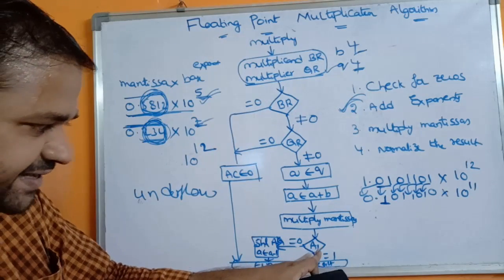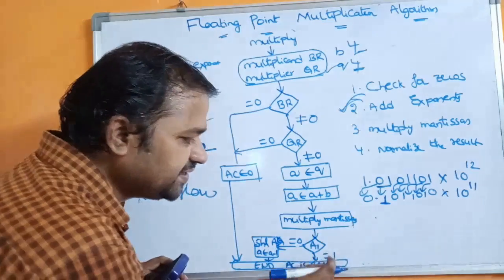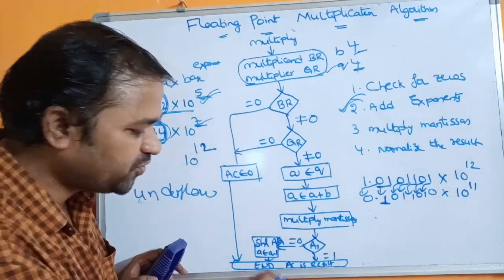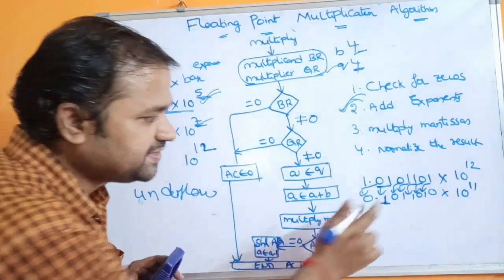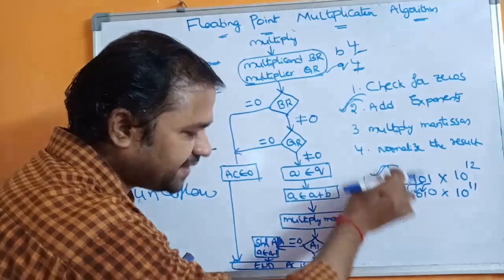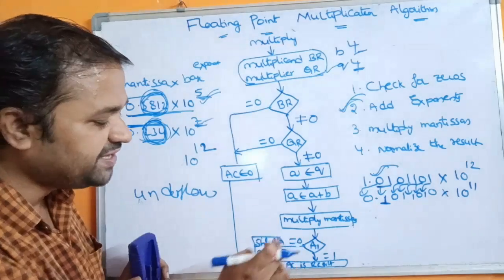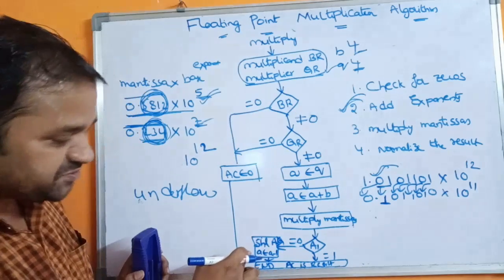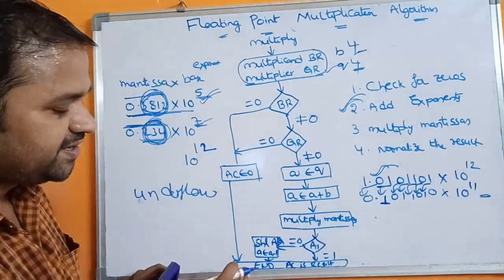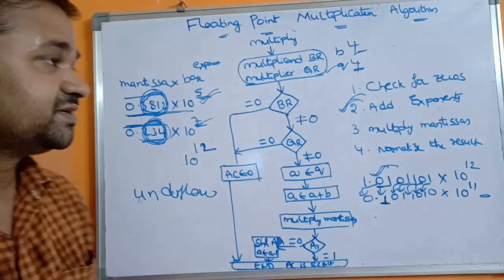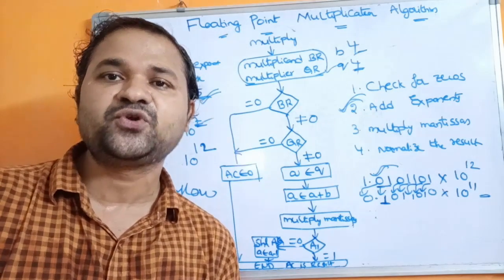To summarize the normalization check: if the most significant bit A1 of the mantissa is 1, there is no underflow and the result in AC is the final answer. If A1 is 0, we perform a shift-left on the result and decrement the exponent, then check again. In this way we can perform multiplication on floating point numbers.